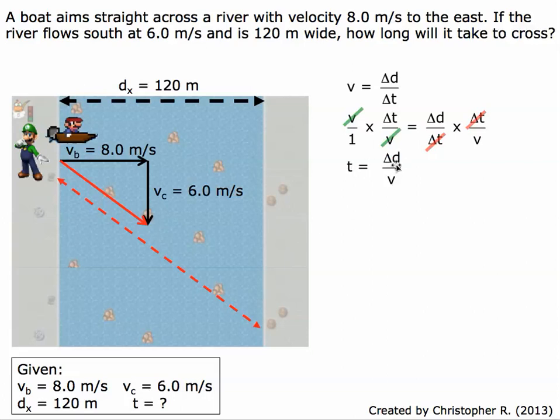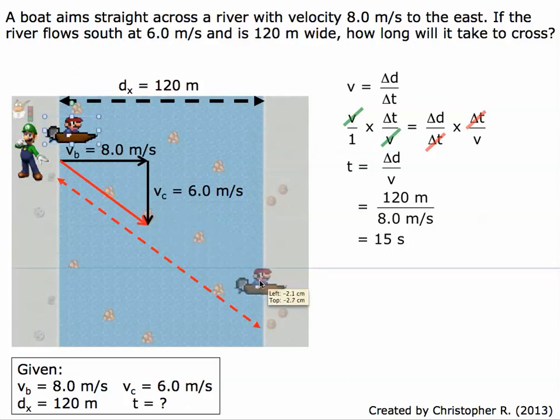Now we can put in our numbers. Distance is 120 meters, and the velocity is 8 meters per second. So we have 120 meters over 8 meters per second. Plug those into our calculator, and we have 15 seconds. So it's going to take Mario 15 seconds to get across the river.